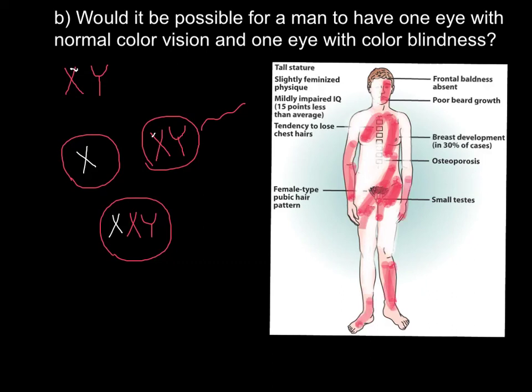This is a very rare case. Klinefelter syndrome occurs in about 1 in 500 to 1,000 phenotypical males born, and red-green colorblindness is also relatively rare. The combination of both factors gives a probability of perhaps one in a million or more. That is all for today — thank you for your attention, and please subscribe for new videos posted every week.